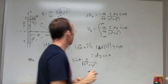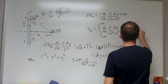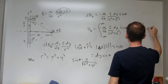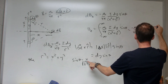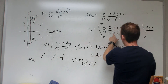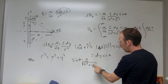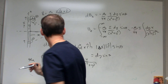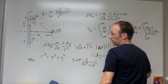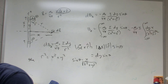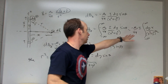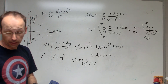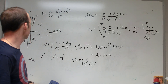Putting that in, the corrected integral becomes: negative μ₀ over 4π times I, integrated from negative infinity to infinity of x dy over (x² + y²)^(3/2). The x comes out as a constant since it doesn't change. That is the integral you would then look up in an integral table, and you do get the standard result for the magnetic field due to a long straight wire. That's how you set it up.